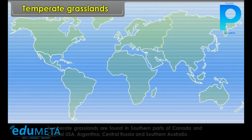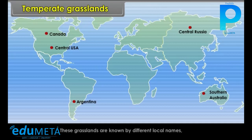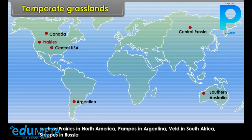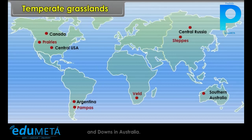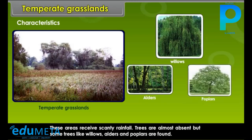Temperate Grasslands are found in southern parts of Canada and Central USA, Argentina, Central Russia and Southern Australia. These grasslands are known by different local names such as Prairies in North America, Pampas in Argentina, Veld in South Africa, Steppes in Russia and Downs in Australia. These areas receive scanty rainfall. Trees are almost absent but some trees like willows, alders and poplars are found.